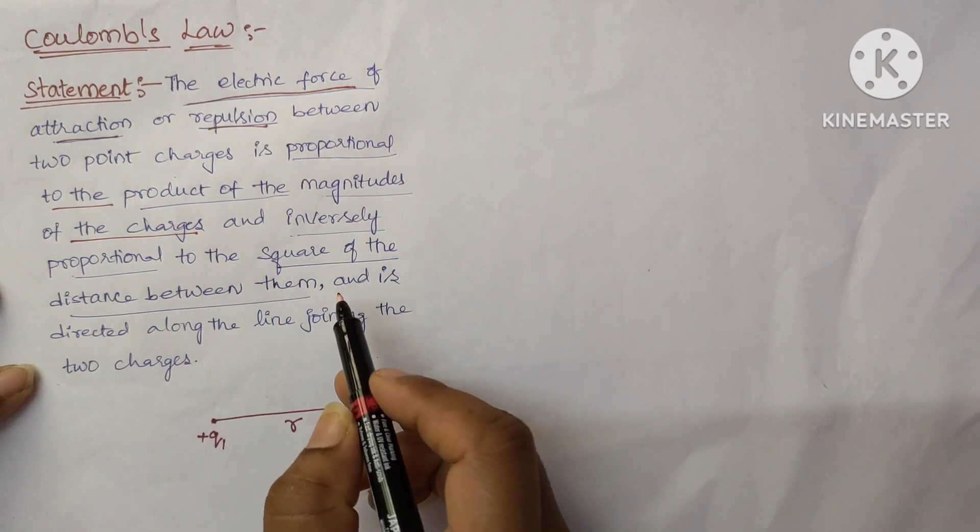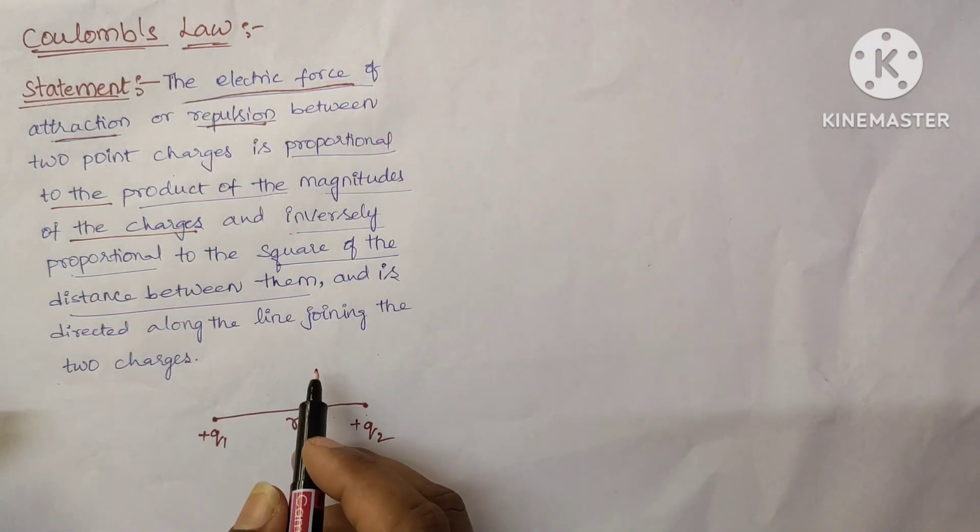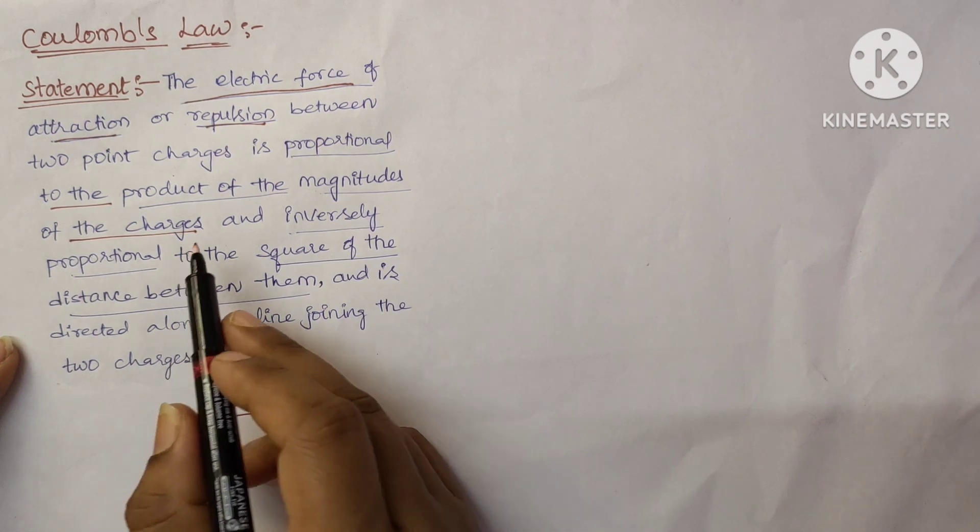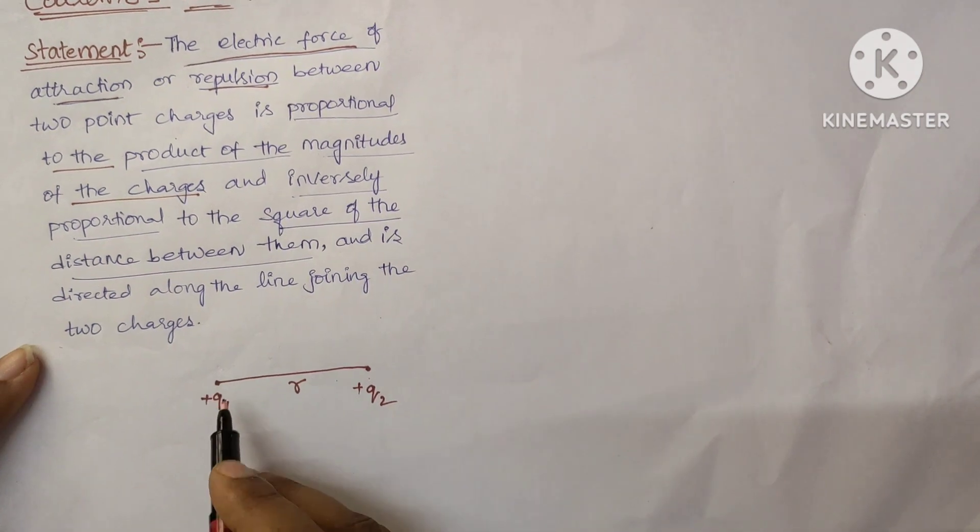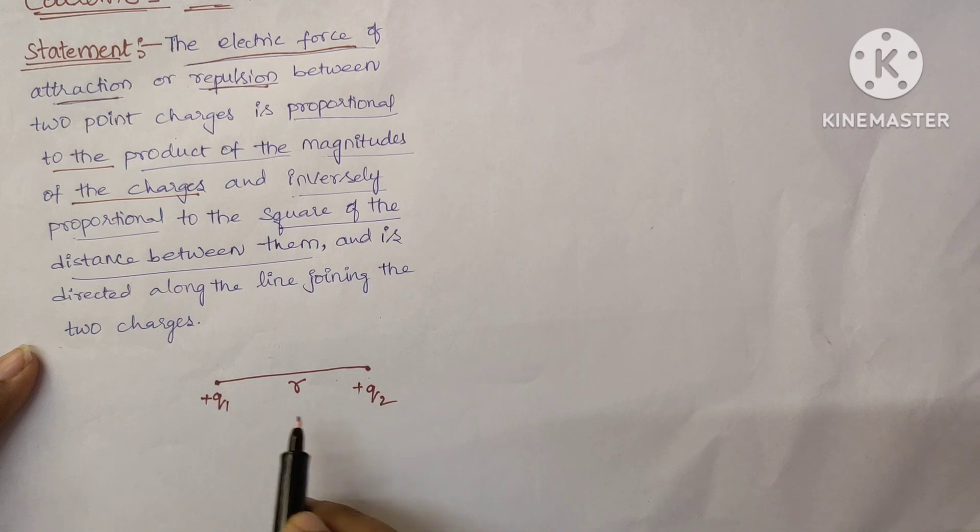Let's see this statement in two parts. Electric force of attraction or repulsion is directly proportional to the product of the magnitudes of the charges. Here, let us consider a plus Q1 and plus Q2 charges. These two are the point charges and are separated by a distance, let's say R.